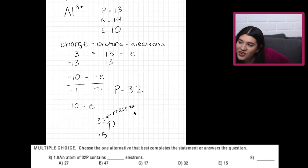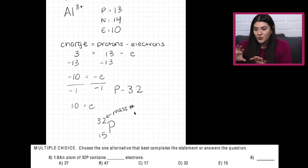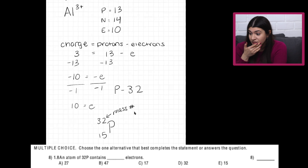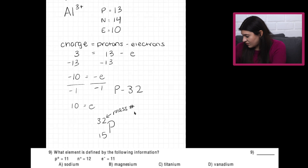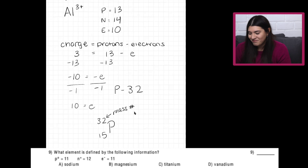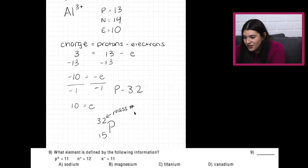They're going to try to trip you up depending on the different notations they use. As long as you know the different notations and what everything represents, you'll be fine. Question 9: we find element 11 on the periodic table and it's sodium. Just looking at the protons gives us the atomic number.